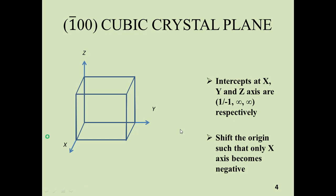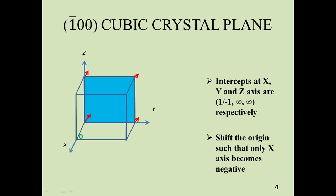Our new origin is this one. When you move in this direction, this is the negative x-axis direction, but the y-axis and z-axis are still positive. The four corners in the negative x-axis direction are this one, this one, this one, and this one. Join these four corners and you will get the (1̄00) cubic crystal plane.